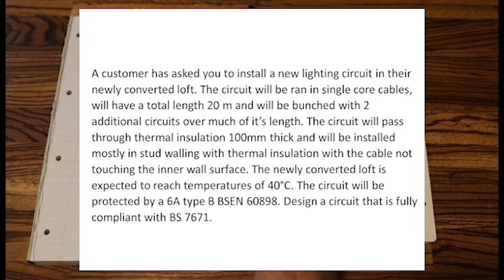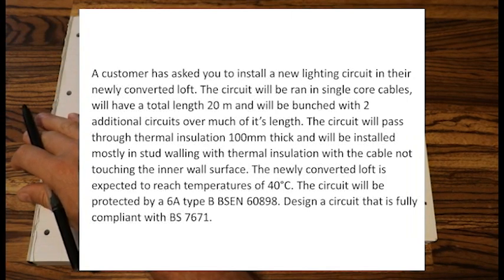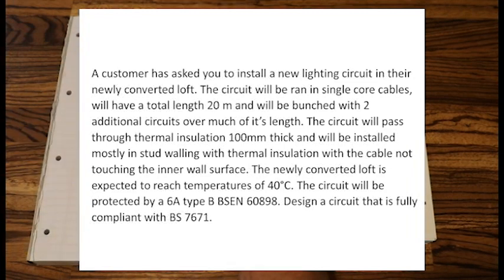So let's get started then. If it's a lighting circuit straight away we know the volts will equal 230 because we do not have a 400 volt lighting circuit. The circuit will be run in single core cable, singles, and we'll have a total length of 20 meters, L equals 20 meters, and we'll be bunched with two additional circuits, so CG is 3 total.